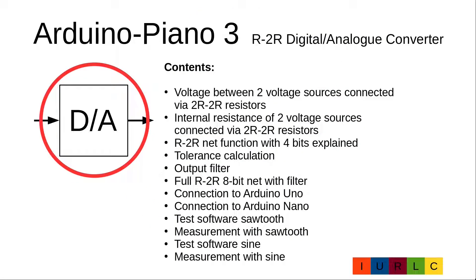To understand the R2R Digital Analog Converter, it is necessary to understand the output voltage of two voltage sources connected via two R2R resistors, and the internal resistance of such a circuit. With these basics, we will calculate step by step a 4-bit R2R net, then do the tolerance calculation and determine a suitable output filter for a full 8-bit R2R net. We will see how to connect the R2R net to the Arduino Uno and Nano boards, and write test software to generate sawtooth and sine waves and do measurements with both signals.